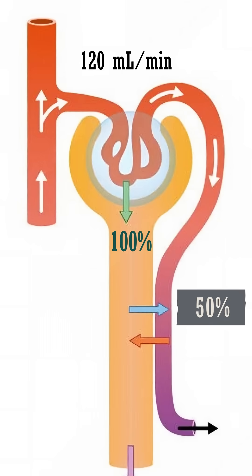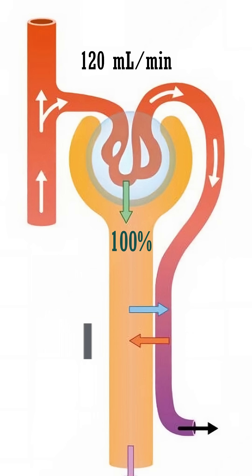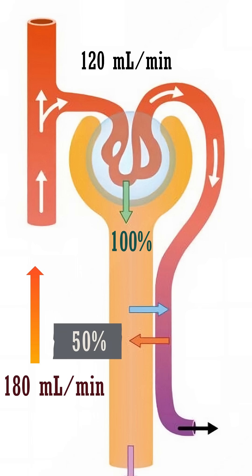If 50% of the substance is reabsorbed, then the clearance reduces to 60 ml per minute. And if the tubules add another 50% through secretion, then the clearance rises to 180 ml per minute. So the key point is: in all these cases, filtration stays at 120, while the actual clearance changes based on what happens after filtration.